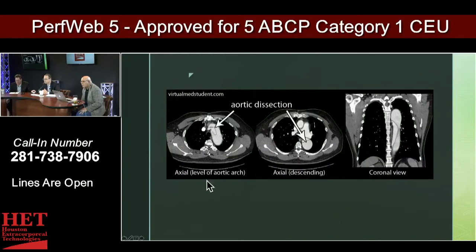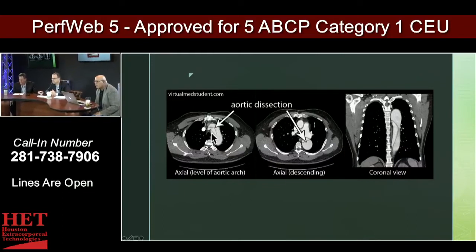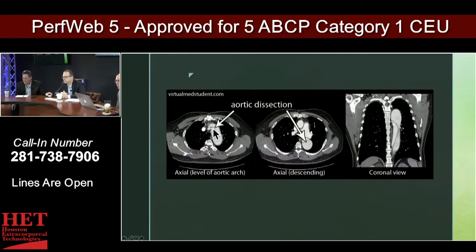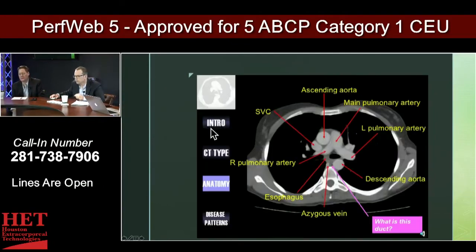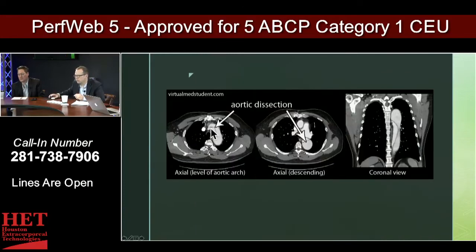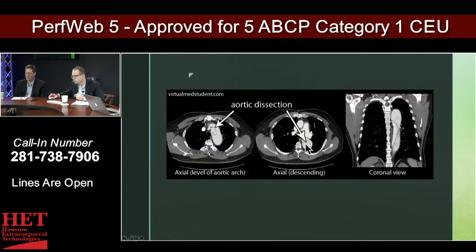That pointer is at the beginning of the dissection — whether or not it's the very origin I can't tell without looking at the whole scan, but it certainly goes into the ascending through the arch. This is demonstrating it in the arch of the aorta, and this is it extending into the descending thoracic aorta.